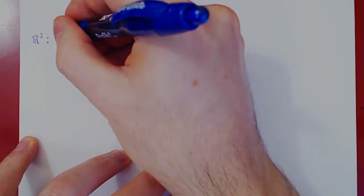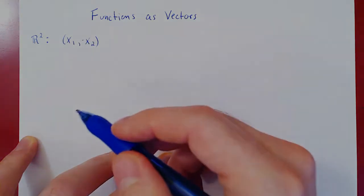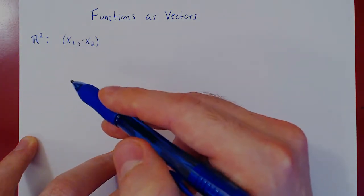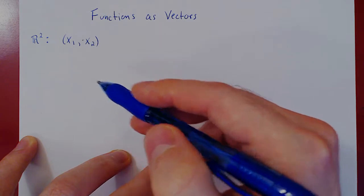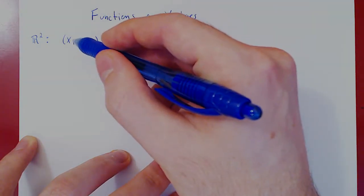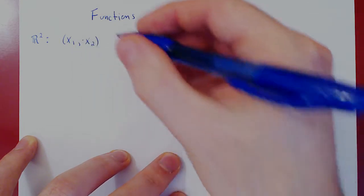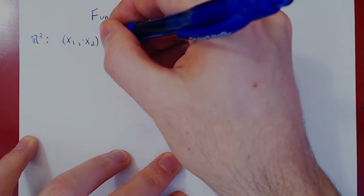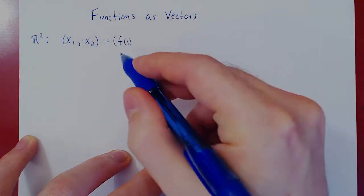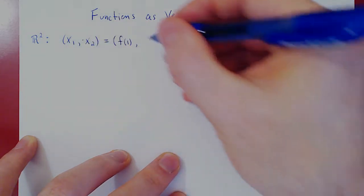Let's go back to R2. R2 consists of all vectors in the plane, and therefore vectors with two components, x1 and x2, where x1 and x2 are allowed to range over all possible real numbers. If you think of this, what you have here is an assignment of real numbers: to the positive integer 1 we assign the value x1, and to the positive integer 2 we assign the value x2. That is simply a function — f(1) is x1, and f(2) is x2.